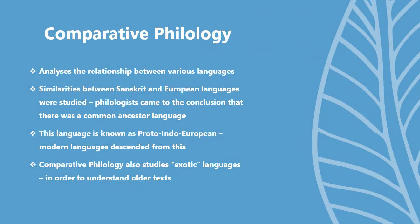Comparative philology studies the relationship between various languages. In the 16th century, several philologists started looking at the similarities that existed between Sanskrit and European languages. They eventually concluded that there was a common ancestor language called Proto-Indo-European from which modern languages descended, which is why those similarities could be observed. Comparative philology also studies exotic languages so that older texts written in such languages can be better understood.